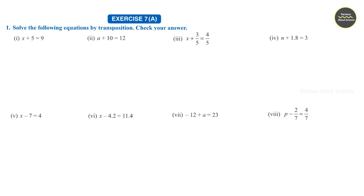We need to take this 5 term from the LHS to the RHS. When we take it to the RHS, it becomes minus 5. So we can write h is equal to 9 minus 5, that is, h is equal to 4.